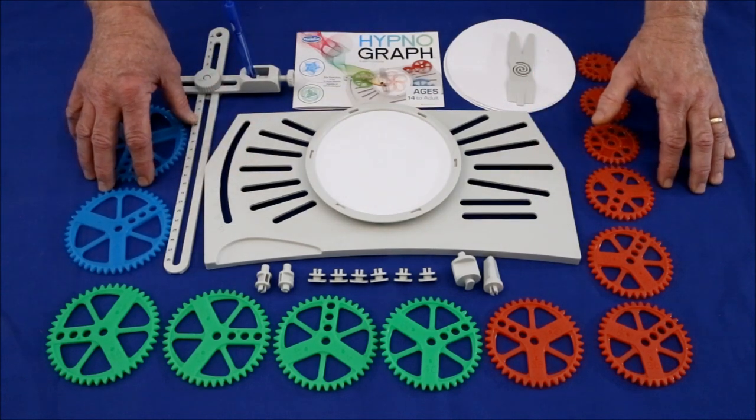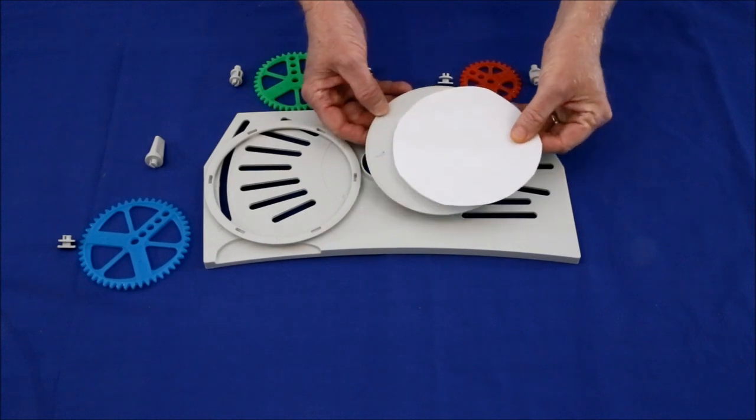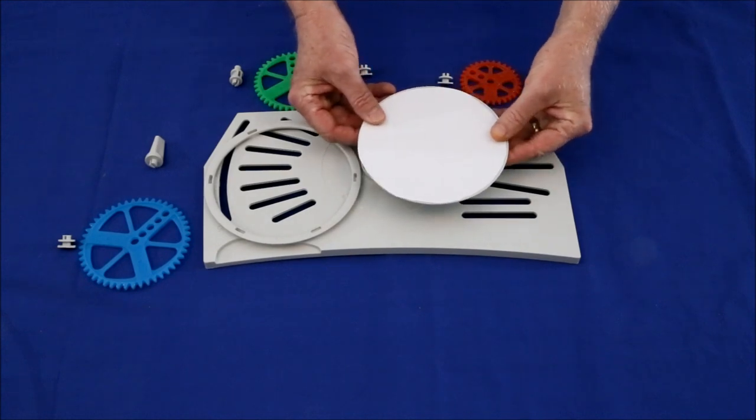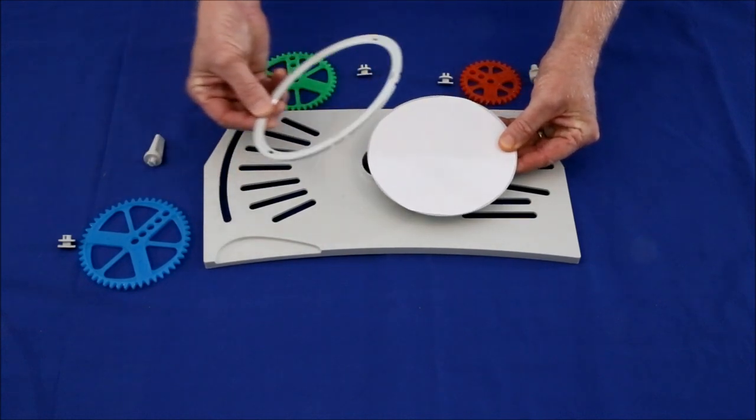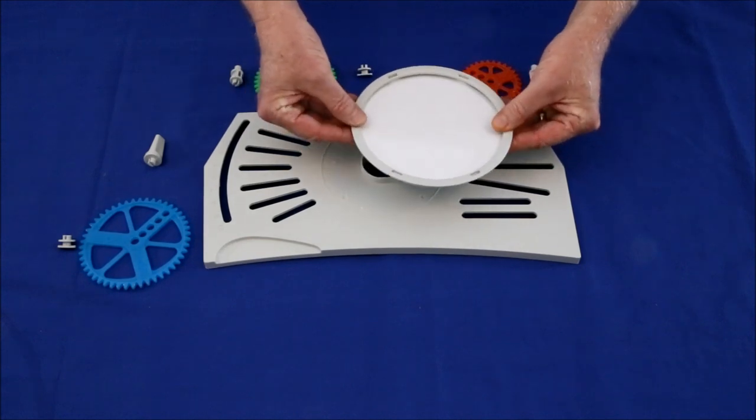Let's put it together and see how it works. First up, let's put in a piece of paper. Take your sheet of paper, place it on the turntable. And I found that it's a little difficult just to put the ring on and pop it in place.